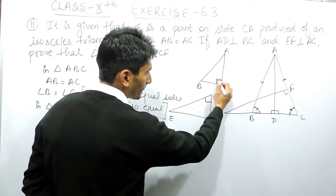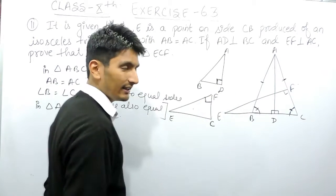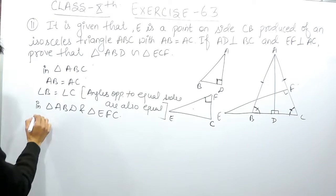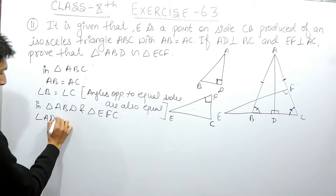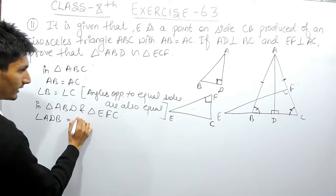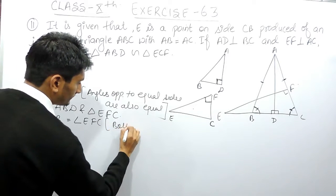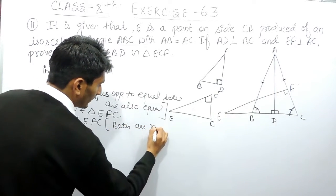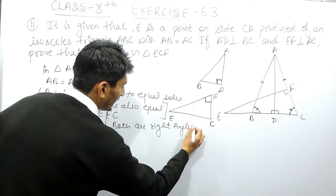This angle must be equal to this angle because both are 90 degrees. So I can say that angle ADB must be equal to angle EFC. Both are right angles, and right angles means both are of 90 degrees.